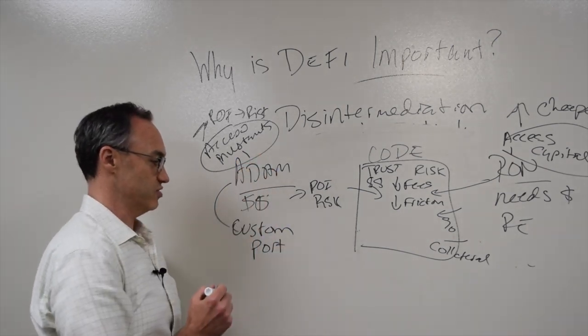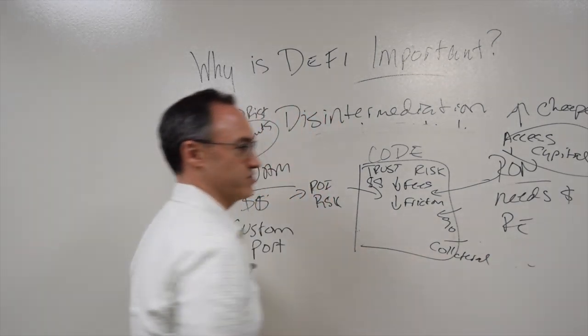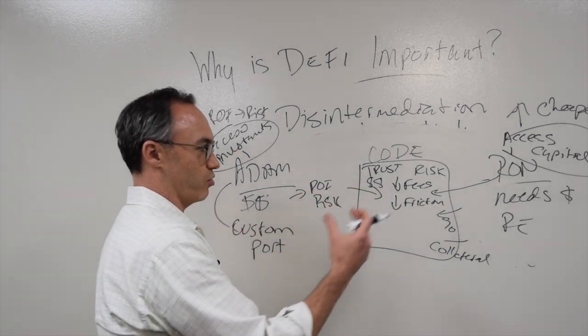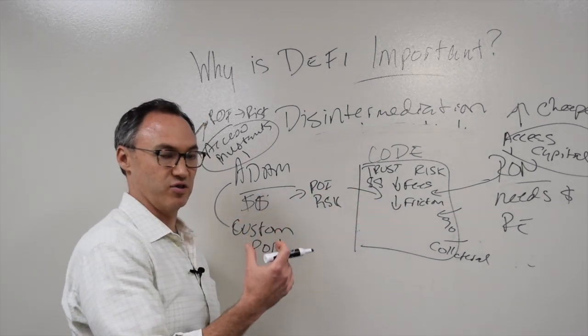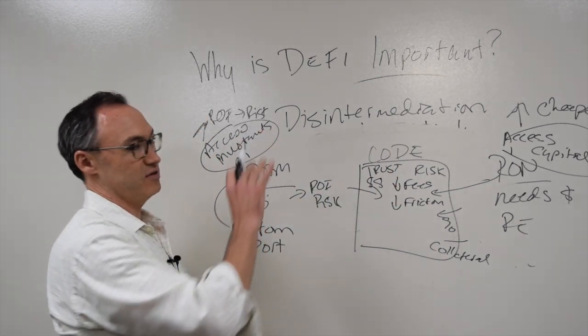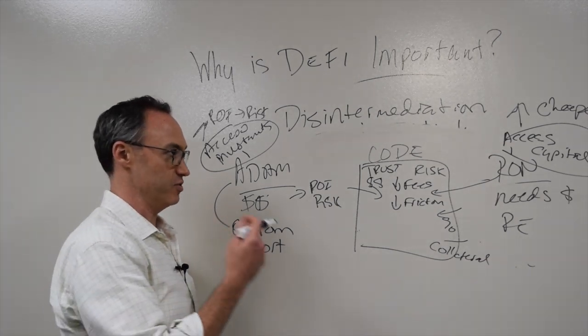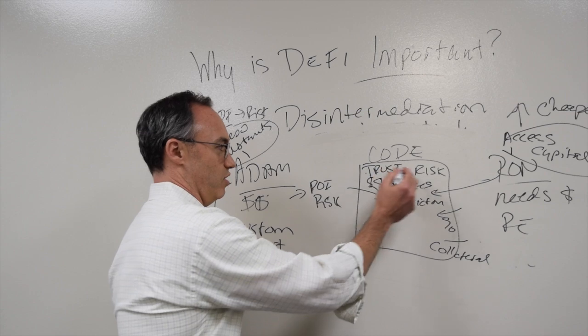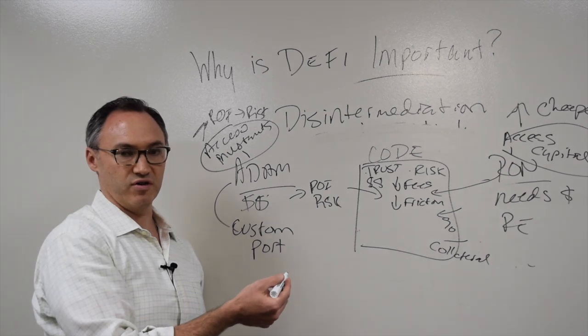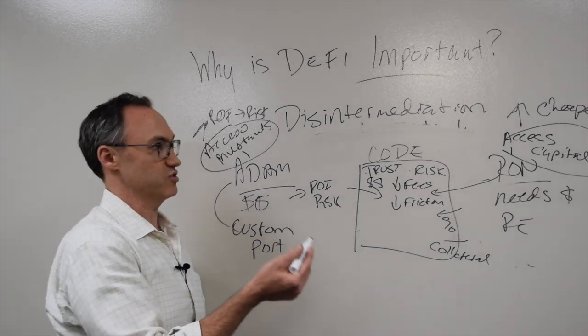It's important if you're on the investor side because you can customize and get a better return. It's important if you're on the side that actually needs the access to the capital because you are going to potentially have more access to it without having to jump through as many of the hoops as you were jumping through before. That is why DeFi is really important and why we're really excited about it—all the potential by outsourcing trust and risk to some level of code. We can create this marketplace, increase access, increase returns, and increase business worldwide.